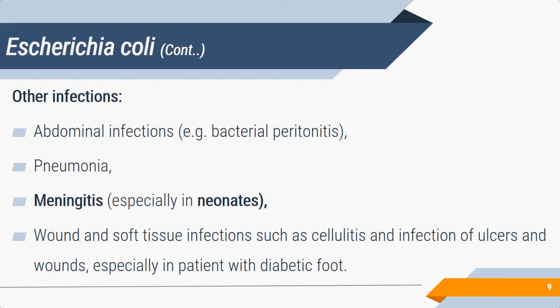Other E. coli infections include abdominal and pelvic infections, pneumonia, and neonatal meningitis. While group B Streptococcus is the worldwide most common cause of neonatal meningitis, E. coli is the second most common cause in India and globally. It also causes wound and soft tissue infections like cellulitis and ulcers, especially in diabetic foot.